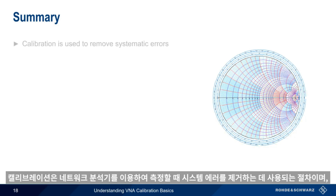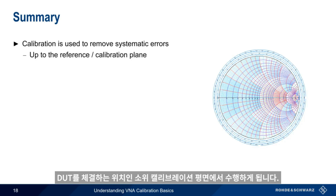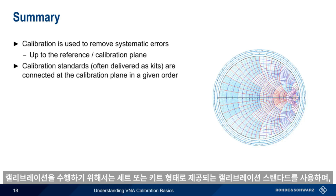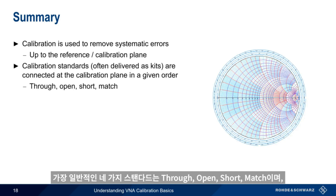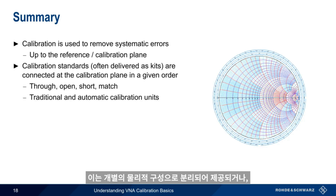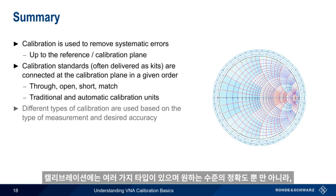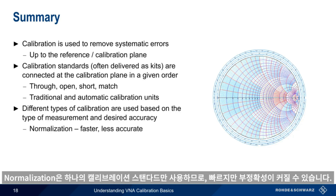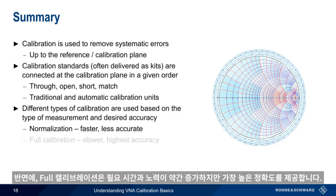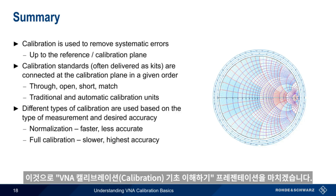So let's summarize what we've learned. Calibration is the process used to remove systematic errors when making network analyzer measurements, and calibration is performed at the so-called reference or calibration plane, which is where we connect our device under test. To perform a calibration, we use calibration standards, often delivered in the form of a set or a kit, and these are connected and measured at the calibration plane in a given sequence. The four most common standards are through, open, short, and match, and these can be implemented either as traditional discrete physical components or integrated into an automatic calibration unit. There are many different kinds of calibration, and we choose our calibration type based on the type of measurements we're making, for example reflection versus transmission, as well as the desired level of accuracy. A normalization is faster because it only uses a single calibration standard but is less accurate, whereas a full calibration provides the highest accuracy for a slight increase in time and effort. This concludes our presentation, Understanding VNA Calibration Basics. Thanks for watching.